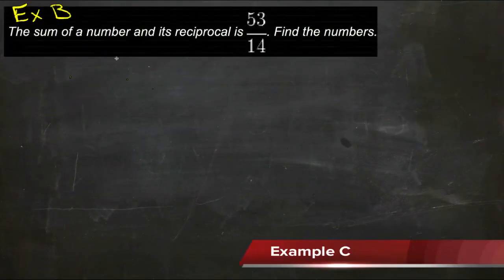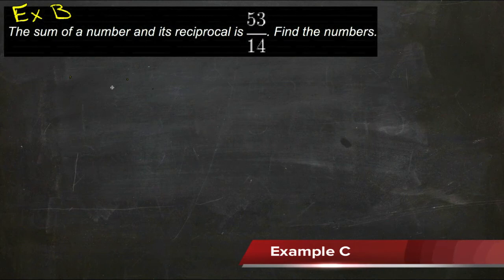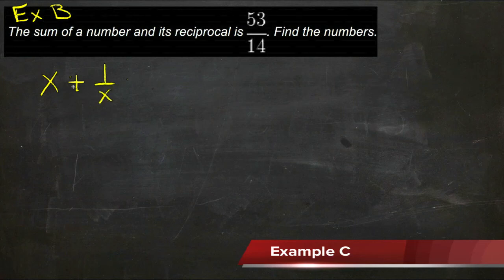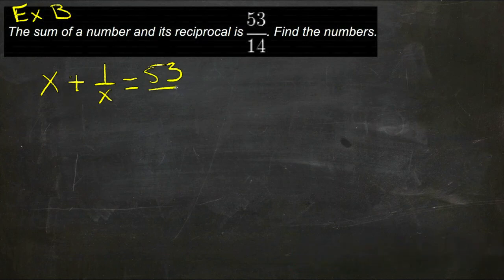For our first application of adding and subtracting rationals, we have a word problem where we're looking for the sum of a number and its reciprocal that equals 53/14. So what we have is x, which is our number, and we're going to add that to 1 over x, which is the reciprocal of x, and we want that to equal 53 over 14.